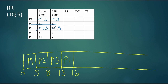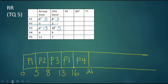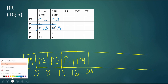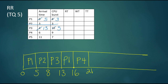The current time is 16, and in the ready queue we have P3, P4, and P5. P4 got there at time six, so P4 is going to go next until time 21, and then P4 will have four time units of CPU burst left.